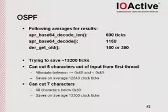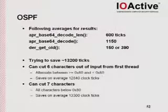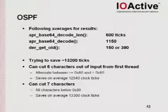So taking all of those averages, trying to save 1,300 to 1,200 ticks, we can cut six characters out from the first thread and alternate between being greater than hex 80 and less than 80, so that we have 80, 81, 80, 81. And we can save approximately 1,200 to 12,840 clock ticks.